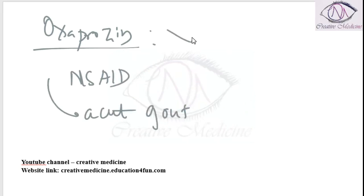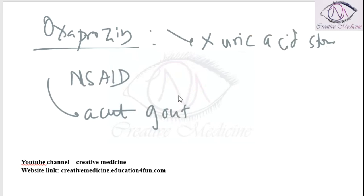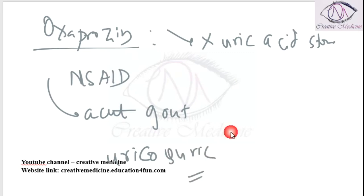Oxoproxin is not used in uric acid stones because Oxoproxin is a uricosuric drug. Because it is a uricosuric drug, it is not used in uric acid stones. Oxoproxin is used in acute gout and it is a uricosuric drug — that is, it causes excretion of the excess uric acid into the urine.